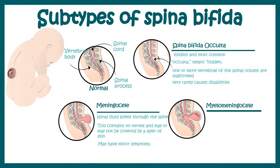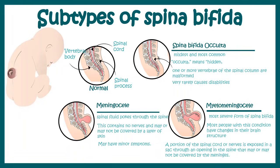The most extreme situation is myelomeningocele. In this case, the entire portion of the spinal cord, the nerves, and the meninges totally protrude out of the back. In most cases it is covered by skin, but in some extreme cases the skin is absent. This leads to severe complications — it greatly increases the chance of bacterial infections causing meningitis, and babies with myelomeningocele often develop many problems including renal issues.